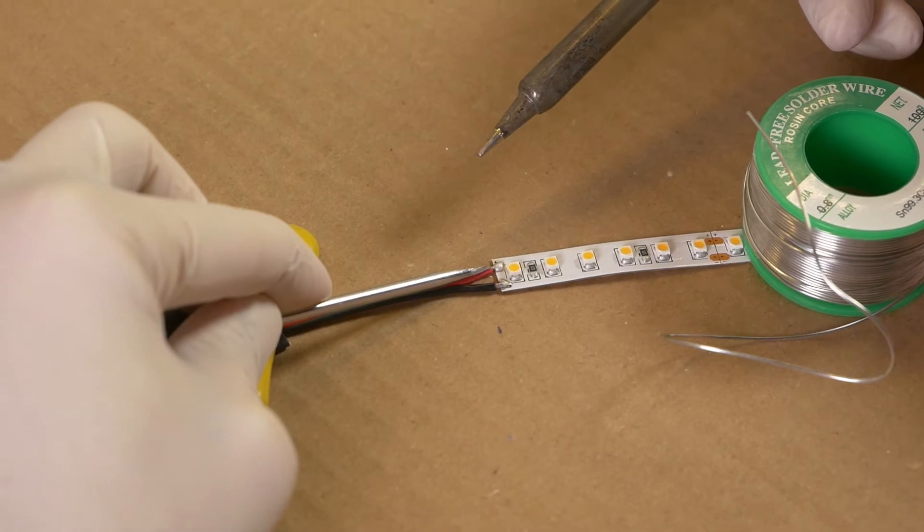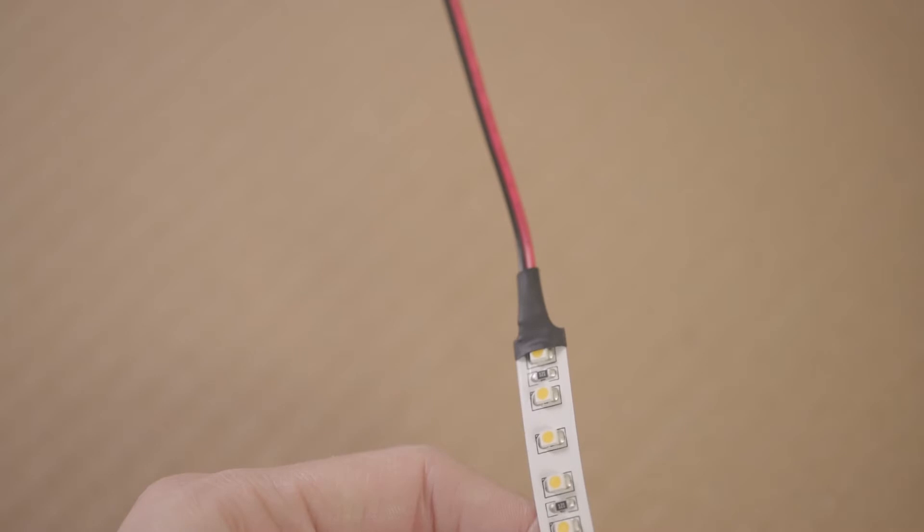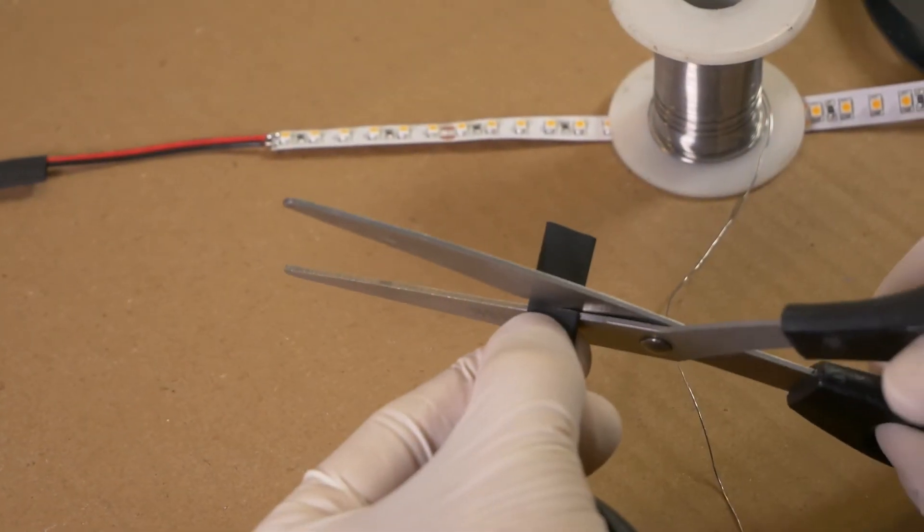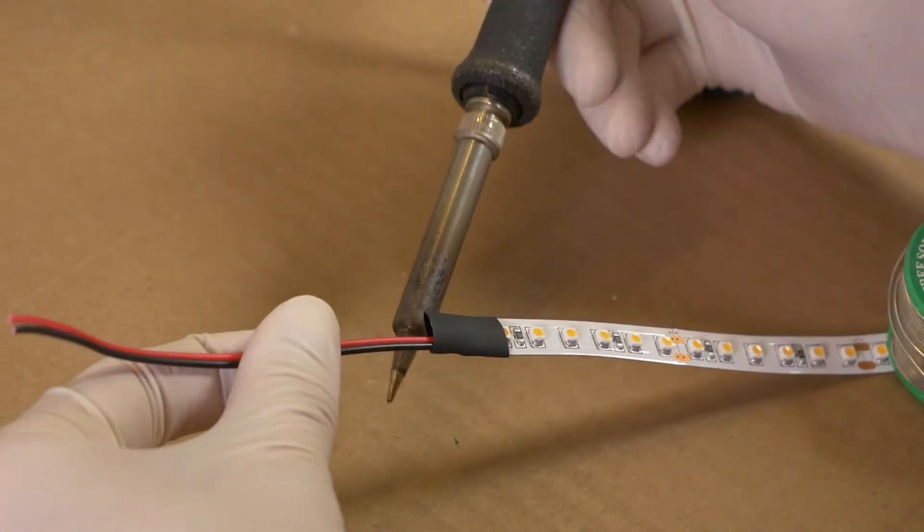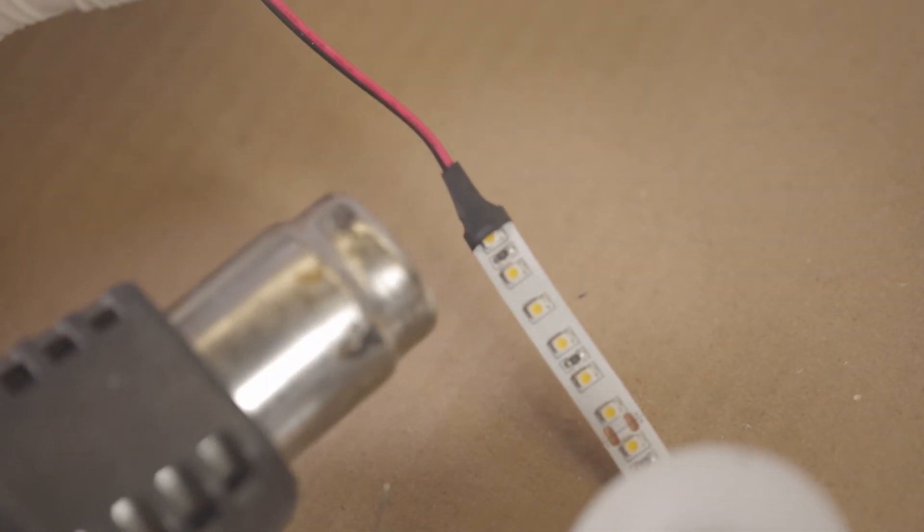For best results, it's a good idea to also use some heat shrink tubing over the joint to give it a little protection and strain relief. Cut a little piece and slide it over, then shrink it with the heat of the iron, or with a heat gun like a powerful hair dryer, or even a small paint stripper.